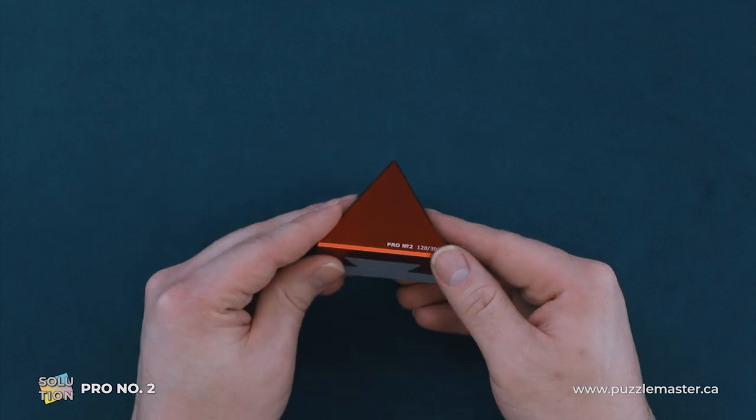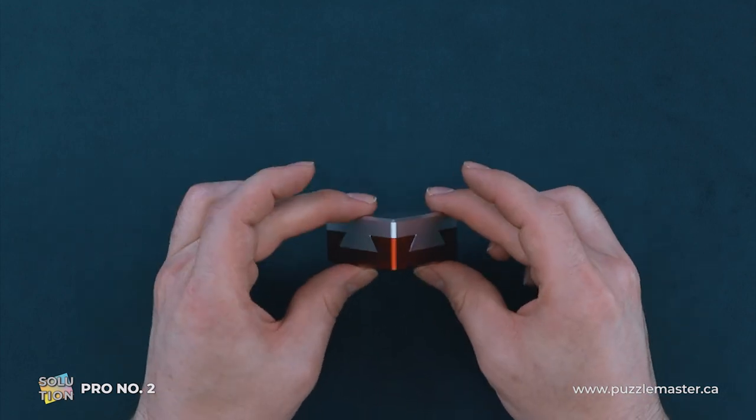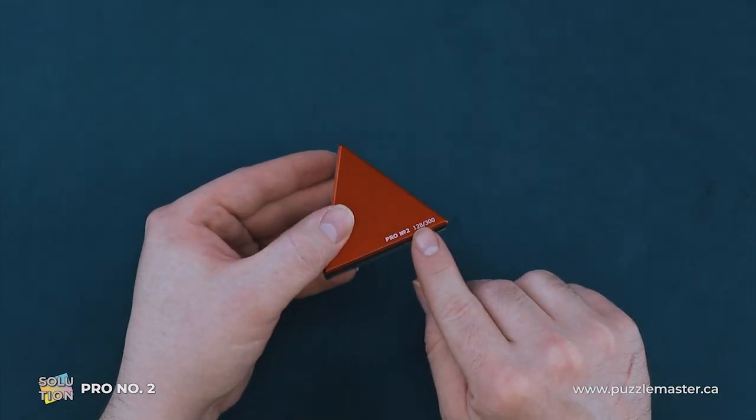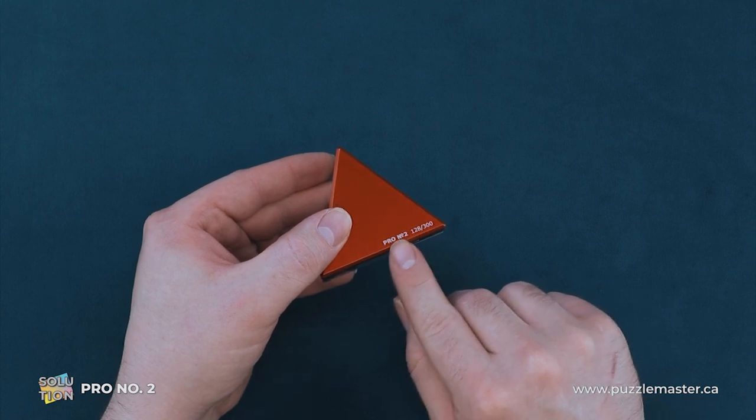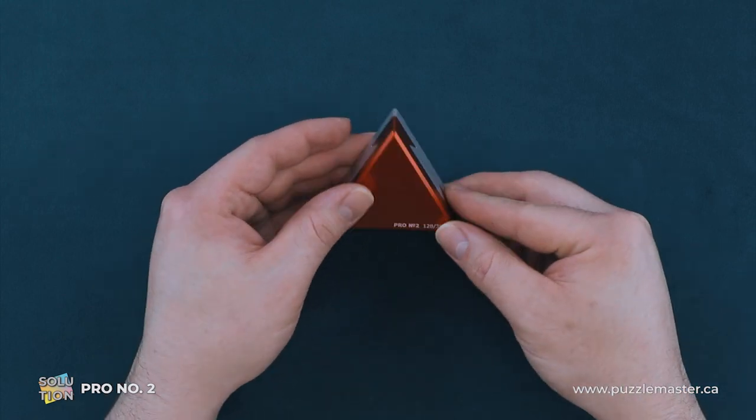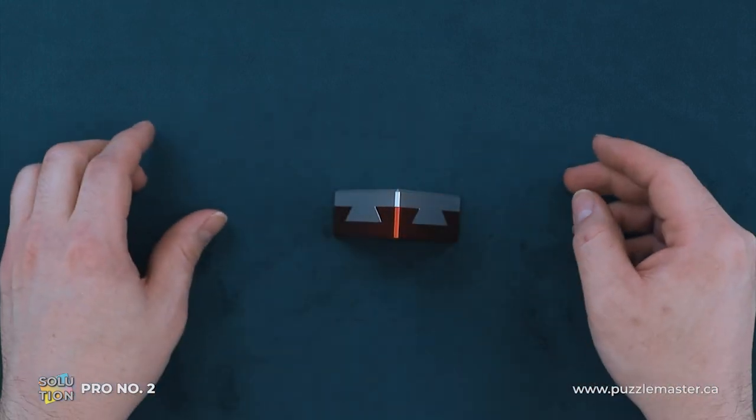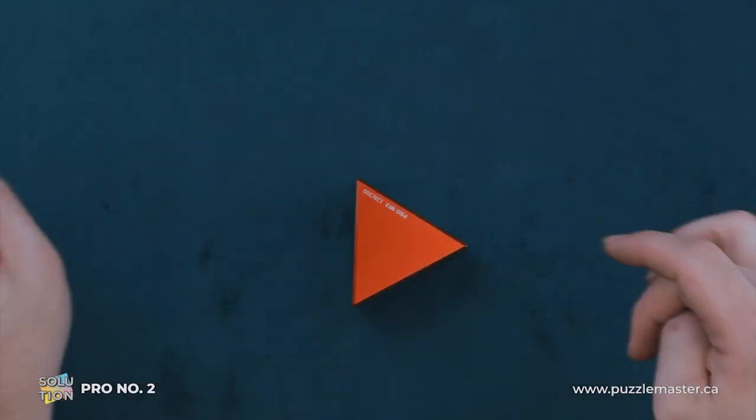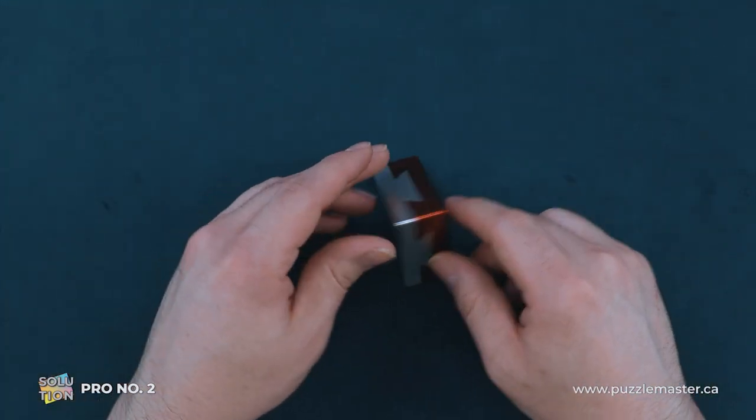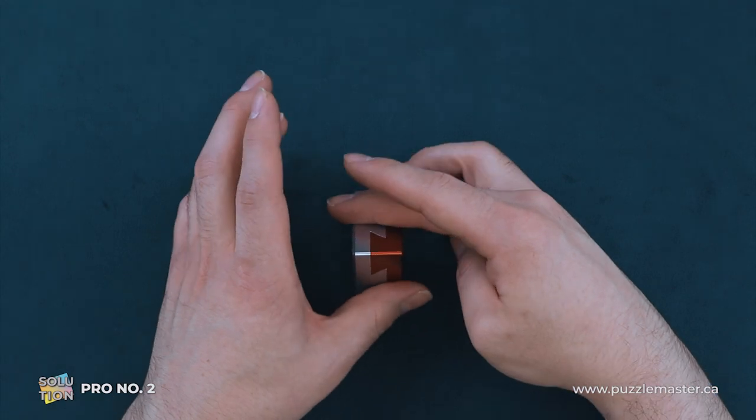To solve this puzzle, we flip it onto its side. So we have the Pro Number 2 at the bottom here, and we just put it onto the side and we give it a spin. And don't knock it over like I did, and we give it a spin.